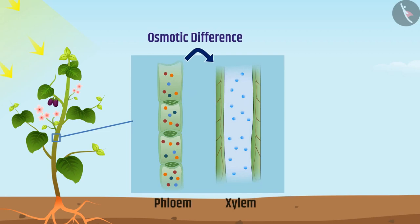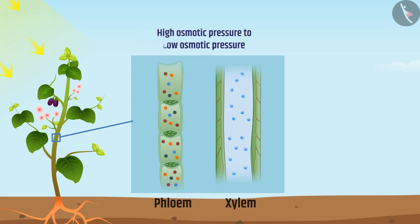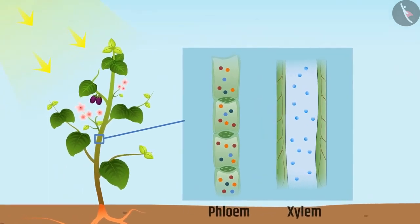This creates an osmotic difference between xylem and phloem. To reduce this difference, water enters from xylem to phloem, increasing osmotic pressure in the phloem. Water and soluble products move from high osmotic pressure to low osmotic pressure and are transported to different locations such as storage organs, fruits and buds. Keep in mind, phloem carries substances both in upward and downward directions, whereas xylem carries only in the upward direction.